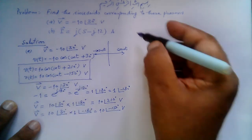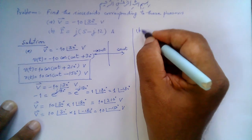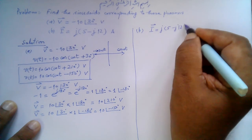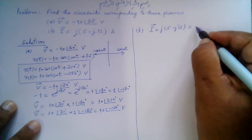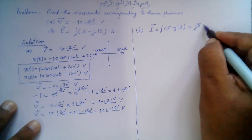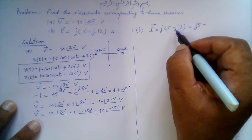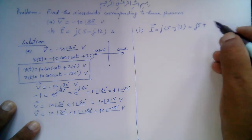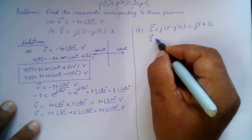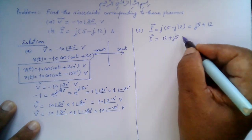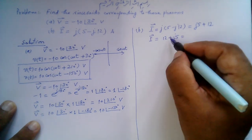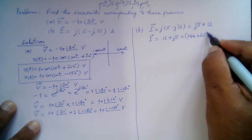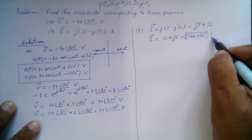For Part B, we are given I-bar equals j times the quantity (5 minus j12). This is j·5 minus j²·12. Since j² equals minus 1, the minus j² becomes plus 1, so that term becomes plus 12. Therefore I-bar equals 12 plus j5.